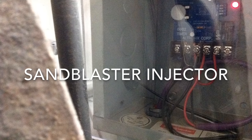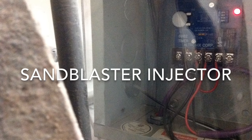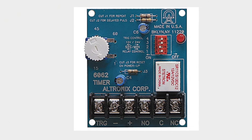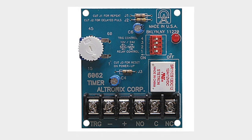The heart of the system is an Alltronix 6062 relay control timer board running off 24 volts DC. There is an anti-flyback diode added to the relay contacts to prevent the solenoid from destroying anything on the board.